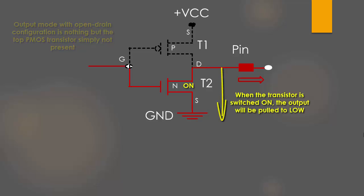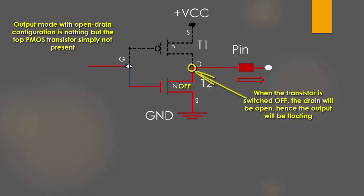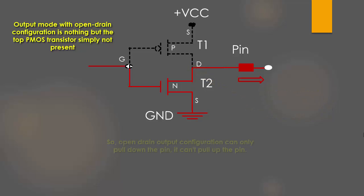When the transistor is switched on, the pin is pulled to ground. And when this transistor is off, the drain of the transistor will be floating or open. That's the reason it is called open drain. As a result, open drain output configuration can only pull down the pin, but it lacks pulling up capability. That means it has two states: either ground or float, which is absolutely useless.